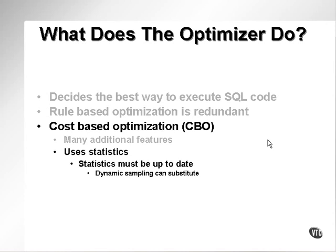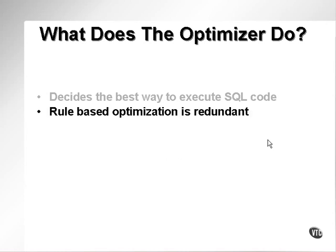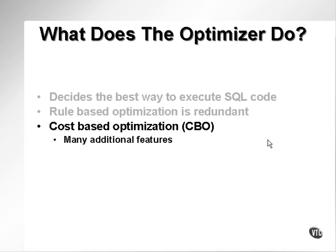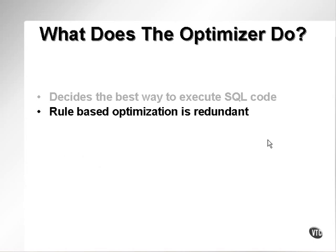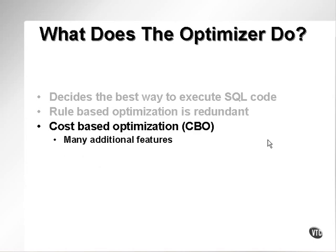What the optimizer does is use two different optional ways of deciding how to optimize SQL code: based on a set of rules, or based on CBO, which is effectively statistics. This is an estimated picture of data versus an actual picture of data. Cost-based optimization is by far the most effective method of getting better performing SQL code.